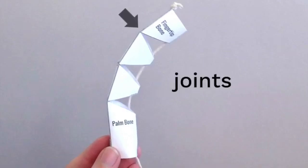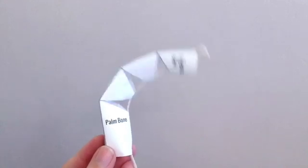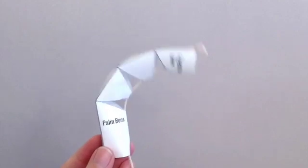The joints are here, here, and here where the bones meet. Each of the joints acts like a hinge allowing the robot finger to bend in those places.